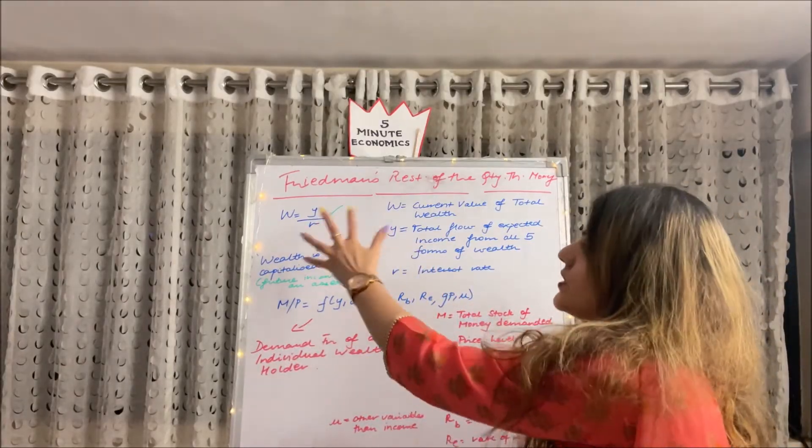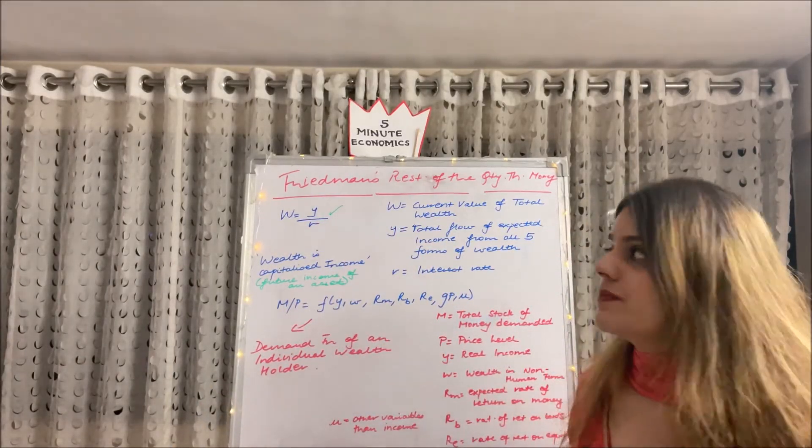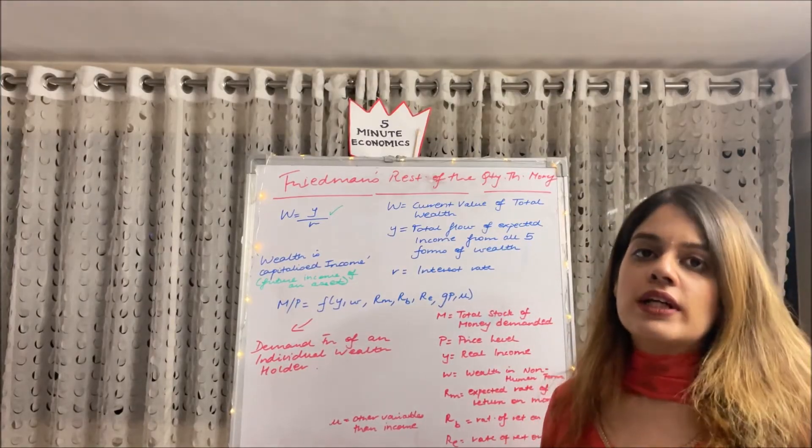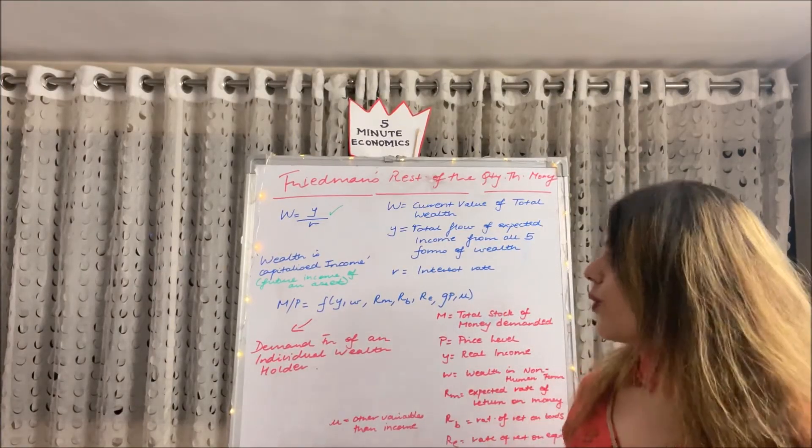So this equation along with this equation has to be written in an answer because he moved the entire quantity theory in terms of wealth. So I hope you are clear with it.